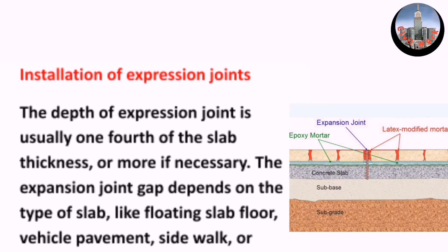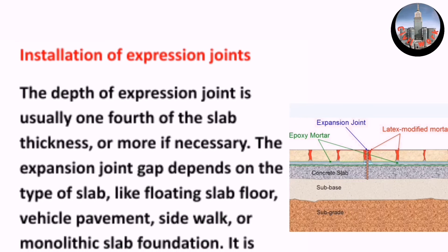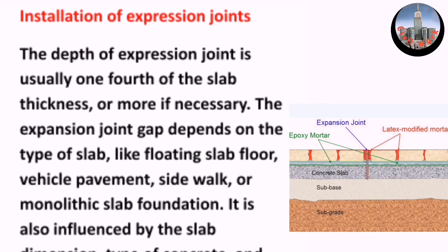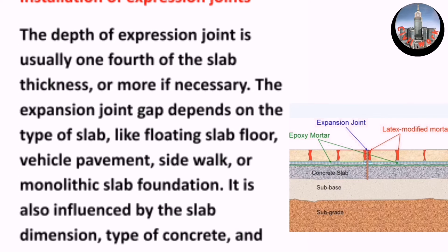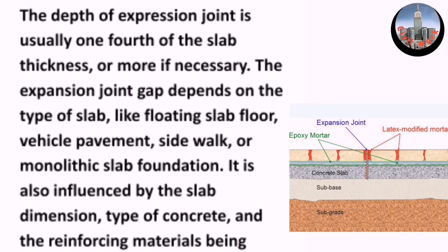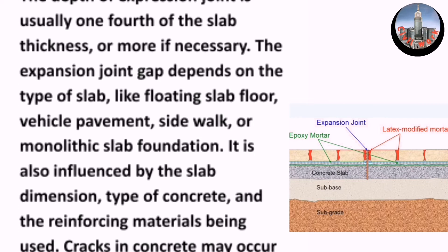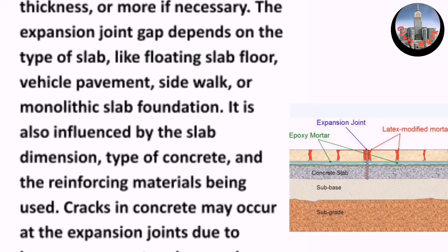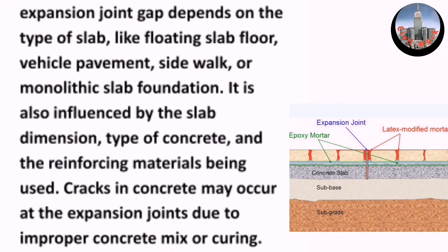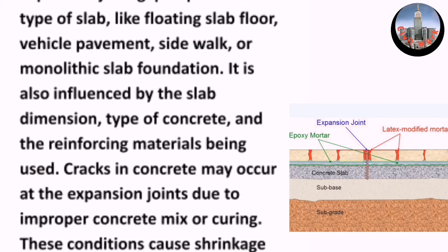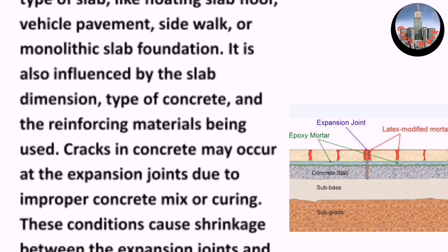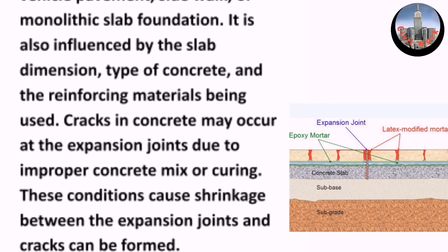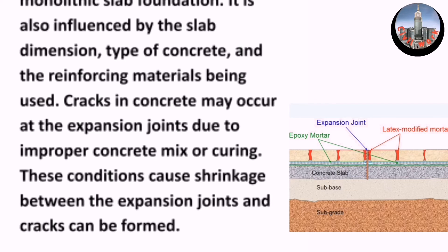The depth of an expansion joint is usually one fourth of the slab thickness, or more if necessary. The expansion joint gap depends on the type of slab — such as floating slab floor, vehicle pavement, sidewalk, or monolithic slab foundation. It is also influenced by the slab dimensions, type of concrete, and the reinforcing materials being used.